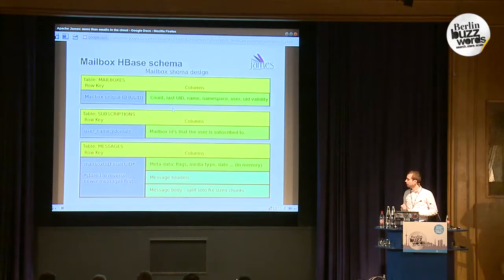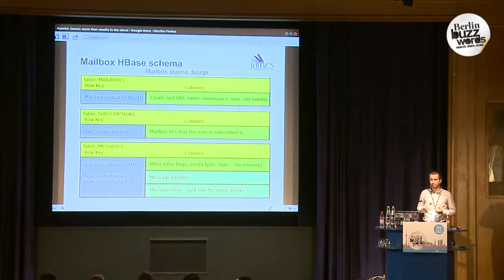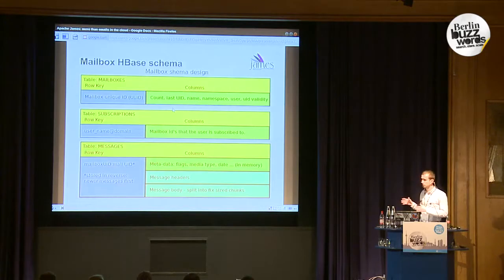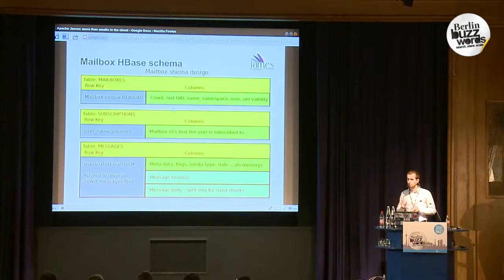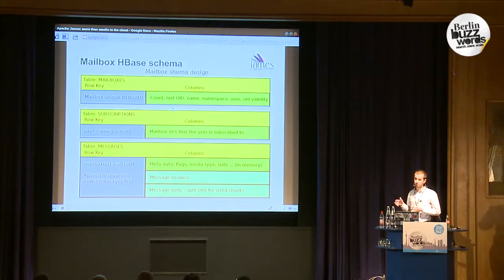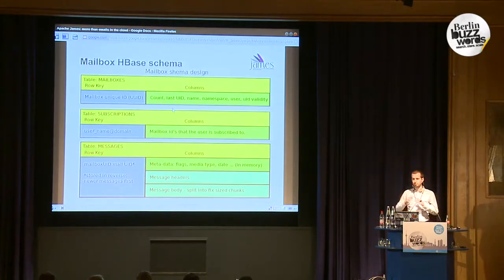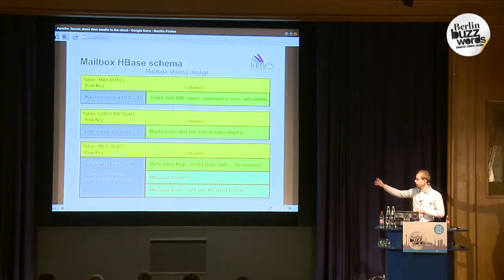We have three column families: the metadata column family, which stores data that mutates. Email messages are essentially immutable — the message body and headers do not change — but there are some flags that change, for example when you read an email it gets marked as read. That mutable data is stored in metadata, which is not a lot of data, so you can keep it in memory in HBase. The other two column families are headers and message body. For the basic view, you can fetch just the headers — subject, from, to, date — without fetching the whole body.